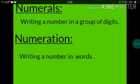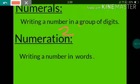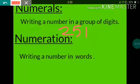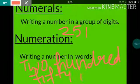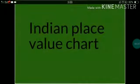Numerals: When we write a number as a group of digits, it is called numerals — like 251. When we write a number in words, it is called numeration. Numeration is of two types: the first is the Indian number system, and the second is the international number system.